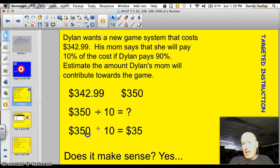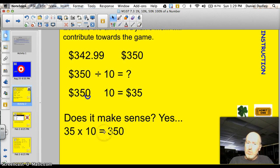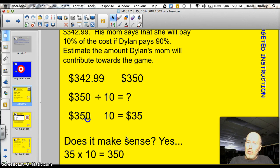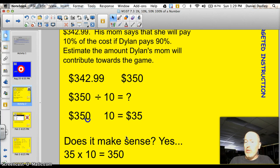We can't use a calculator on this target here, so to divide by 10, I'm going to move the decimal one spot to the left, just like we have before. So $350 divided by 10 equals $35. Does this make sense? Well, sure it does, because $35 times 10 would be $350. So Dylan's mom can contribute about $35 towards the game.